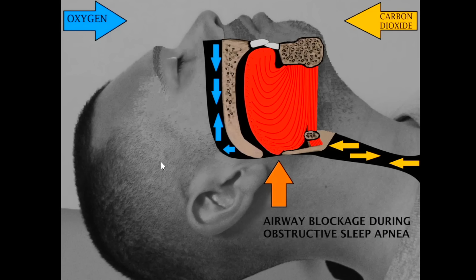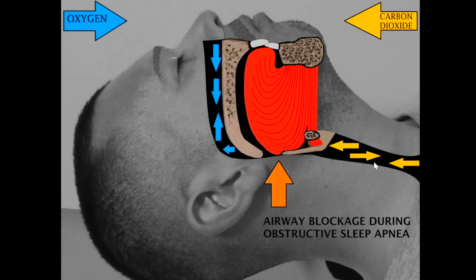The tried and true treatment for obstructive sleep apnea is CPAP — basically air pressure to inflate the airway and allow breathing. There are other mechanisms as well: a mandibular advancement device, or dental device, that moves the jaw forward, bringing the tongue off the back. There's also the Inspire device, a hypoglossal nerve stimulator, which contracts the tongue muscle. It's a physical problem that needs a physical solution. Surgical treatments include jaw advancement and, in extreme cases, tracheostomy.